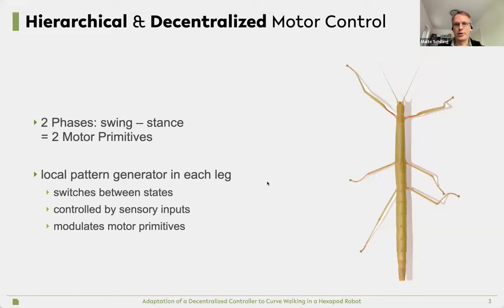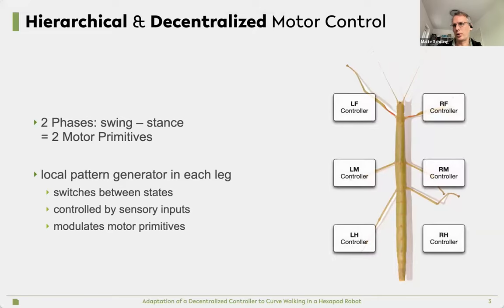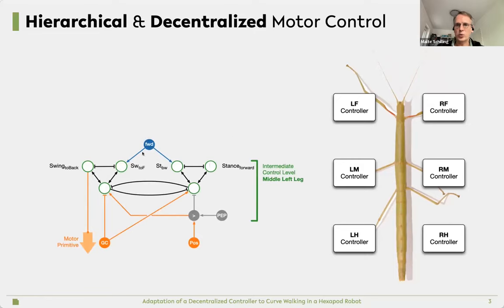The main idea of the WalkNet approach is that it's a decentralized control approach. Each leg has its own controller and this controller decides which movement to perform. We have two levels. The higher level decides which action the leg is performing, a swing or a stance movement. Then there's how to perform the movement. We have a local pattern generator in each leg which is mostly sensory driven. We are looking at very slow walking animals here. This is how one of these controllers looks inside. We have the swing part on the left and the stance part on the right. Important is that there are inhibitory connections between those.